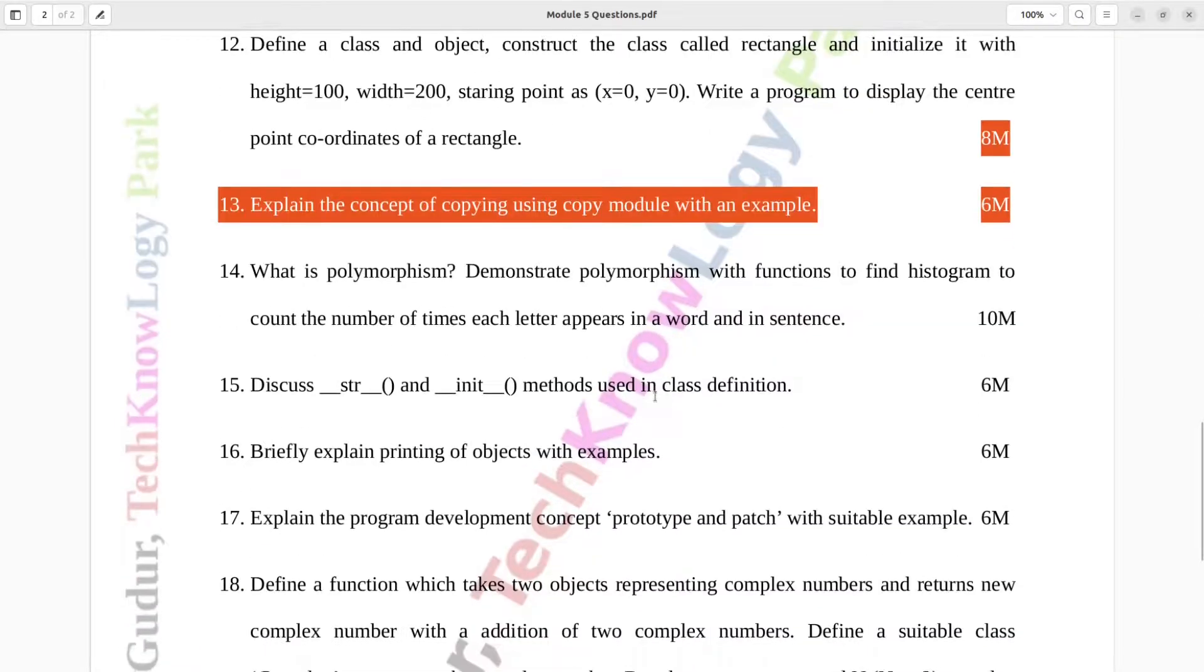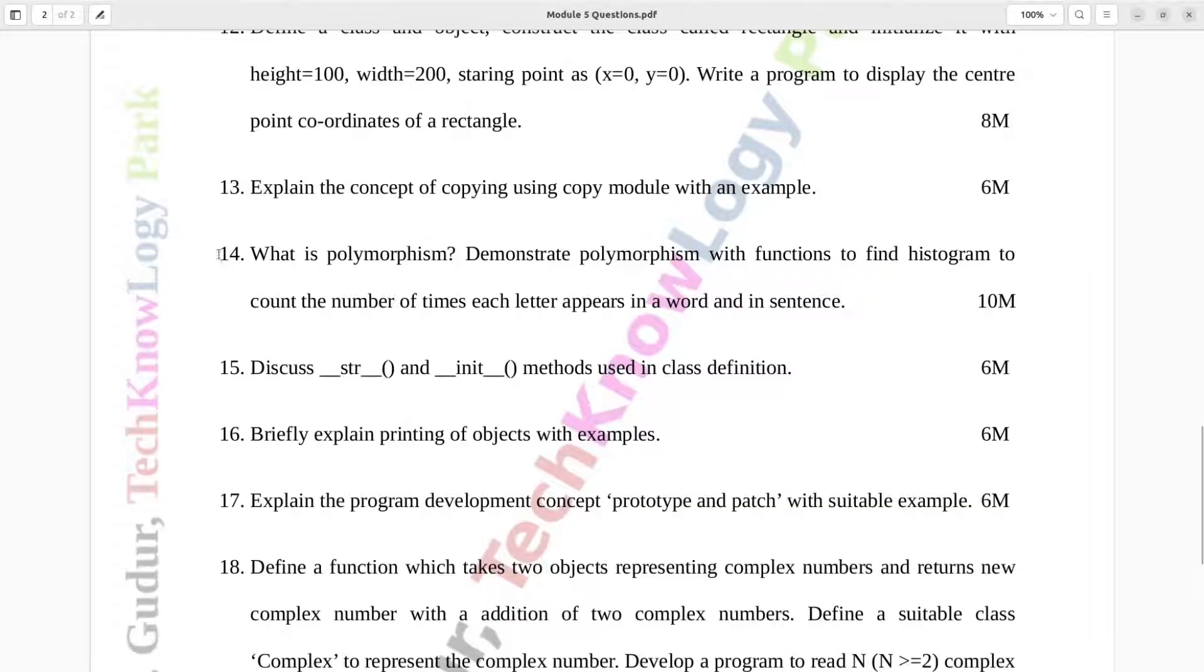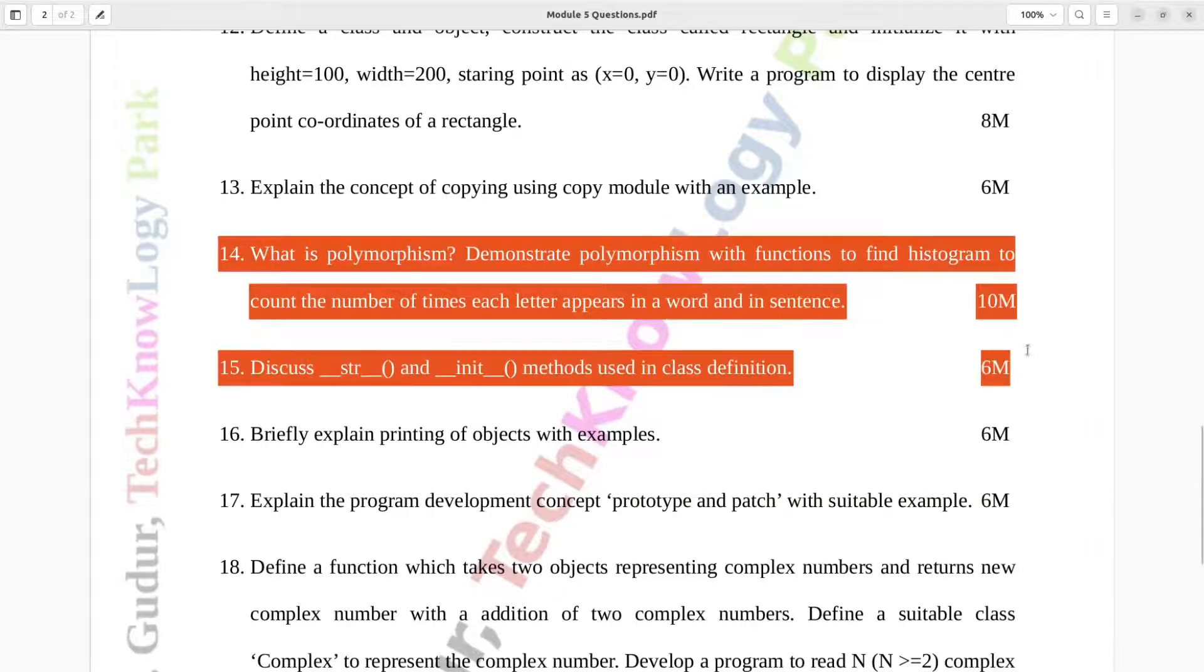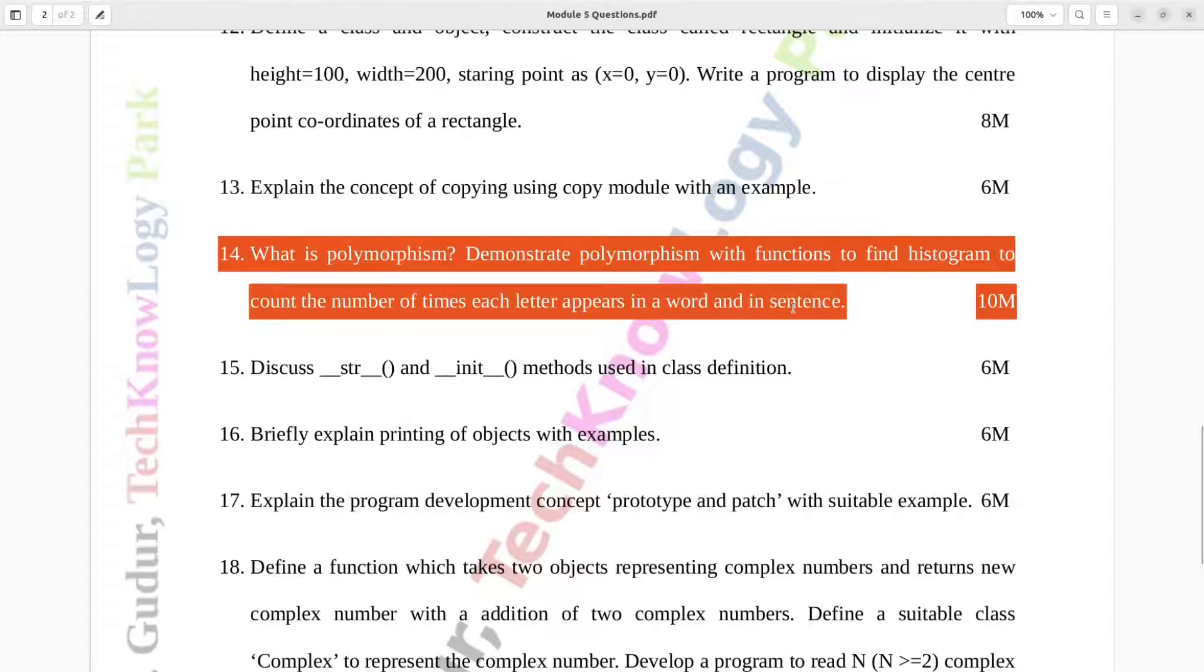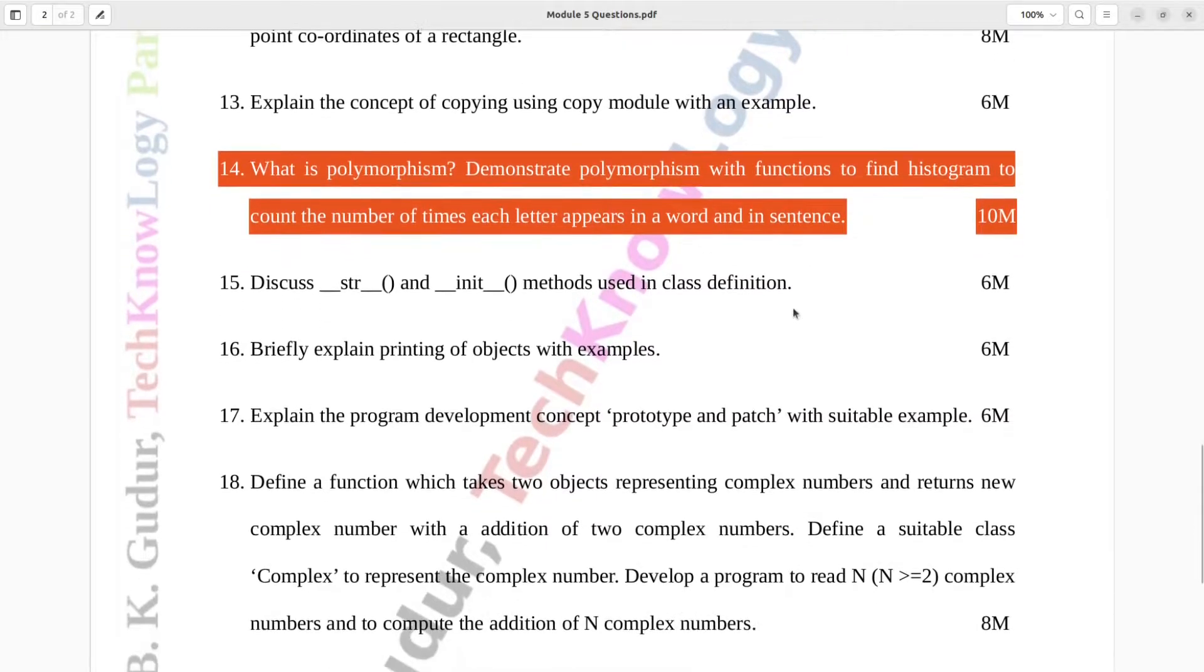Question number fourteen. What is polymorphism? Demonstrate polymorphism with functions to find histogram to count the number of times each letter appears in a word and in sentence. Ten marks.